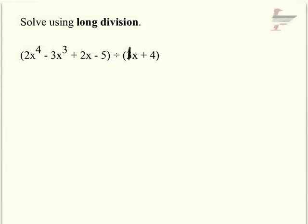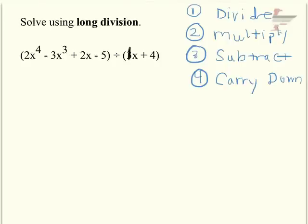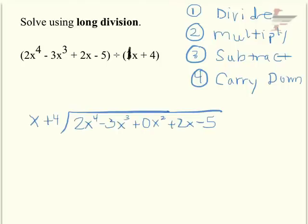This will be a problem — just a refresher on long division. Off to the side I have the steps to remind you: divide, then multiply, then subtract, then carry down, and cycle through those four steps until you have nothing left to carry down. I didn't have any x-squared, so I put in a 0x-squared. The first step is to divide.